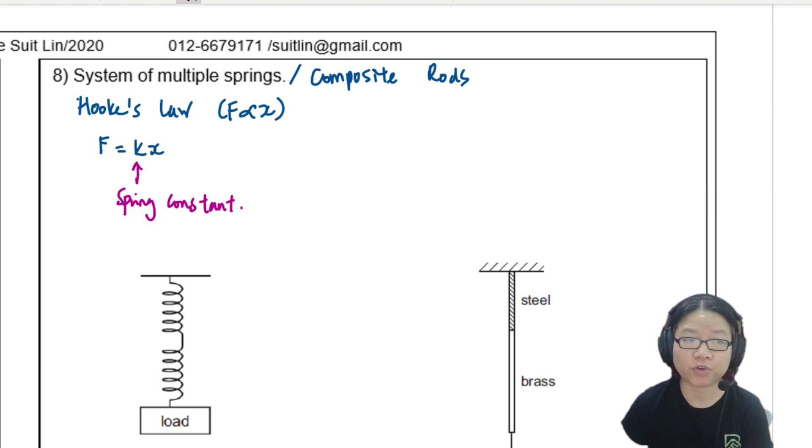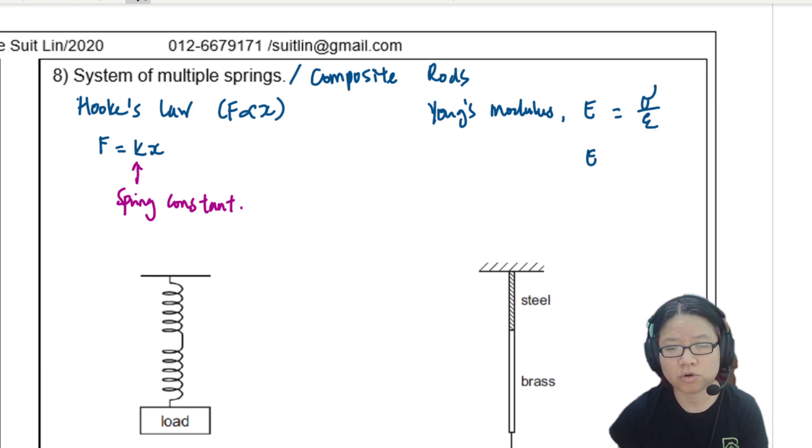For any material that obeys Hooke's Law, it doesn't have to be a spring, it can be a piece of wire. And there is also the Young Modulus, so E will be equal to stress over strain, σ over ε, or F over AEL. So this E is extension.